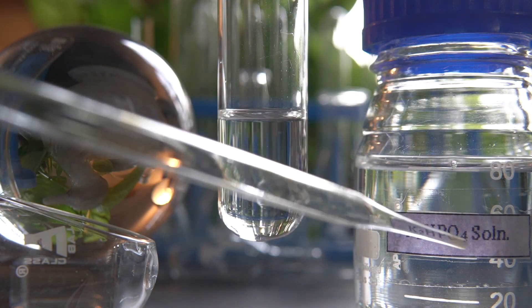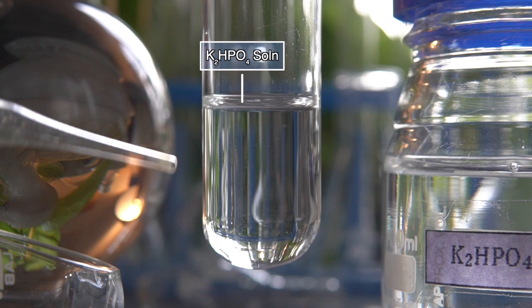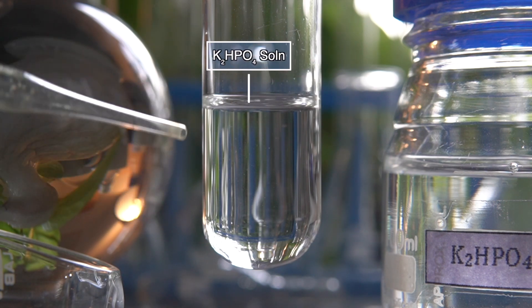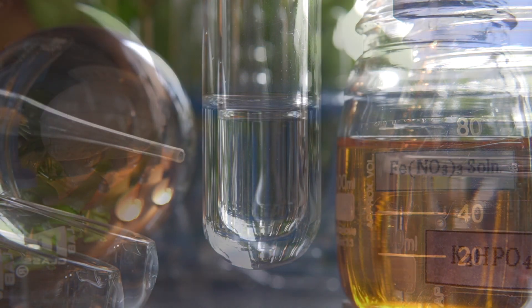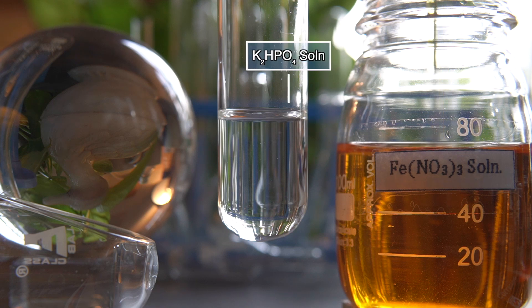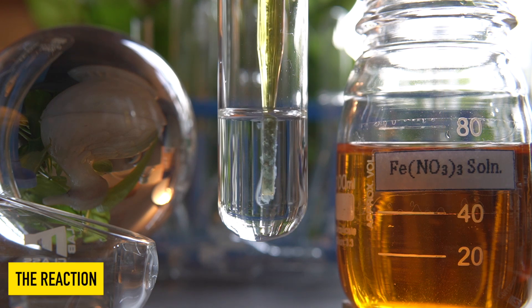To initiate the chemical reaction, we will take some potassium hydrogen phosphate into this test tube. Now we will add iron three nitrate into the clear potassium hydrogen phosphate solution and observe the effects.